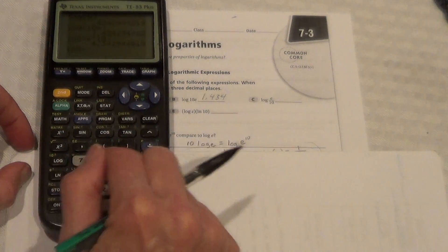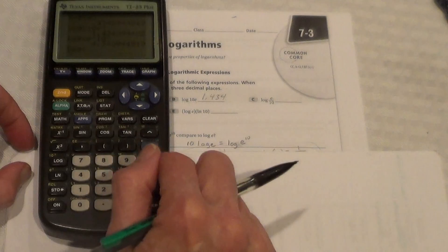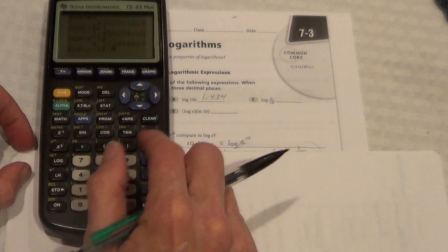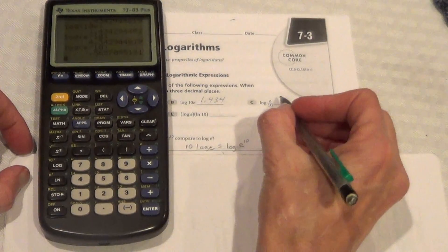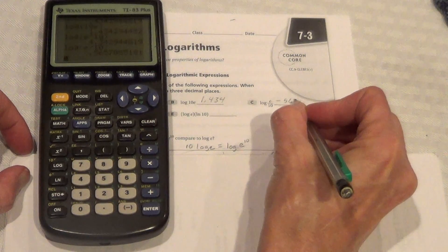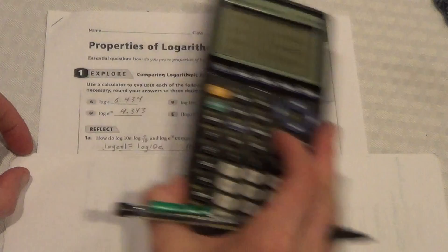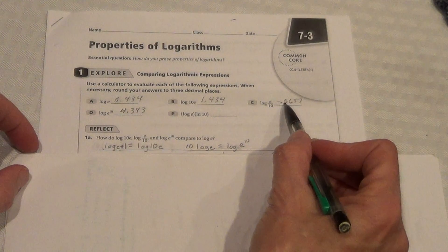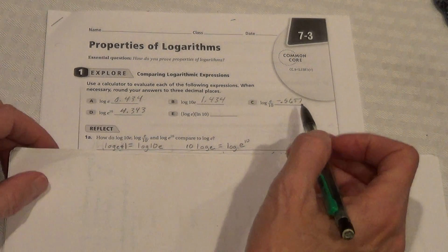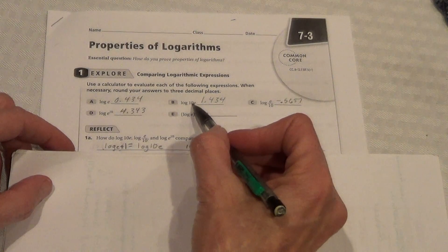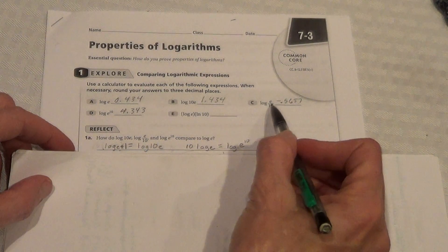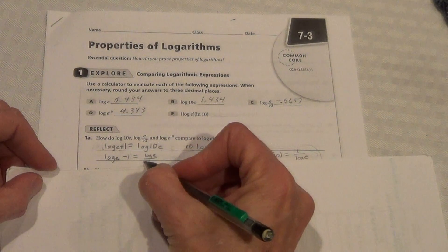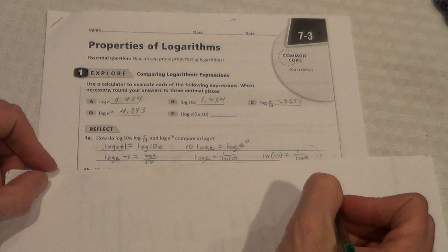Next one. Log e divided by 10, parenthesis closed, equals negative 0.5657. Now, what you might not realize is that 0.434 minus 1 is 0.5657. So, just like how we added to get this 10 times e, here, we're dividing by 10. Now, we're going to subtract 1. So, log e minus 1 equals log e divided by 10. Pretty cool, huh?